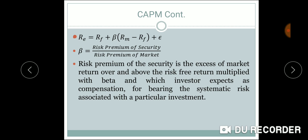The CAPM model is defined by the equation: Re = Rf + Beta × (Rm − Rf) + e. This is the core formula of the Capital Asset Pricing Model.